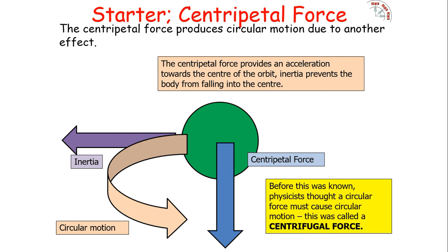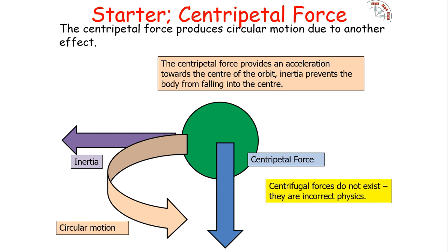Before this was understood, physicists thought that a circular force must cause a circular motion, which they called the centrifugal force. But that does not exist — it is incorrect physics, what we call a fictitious force. It is a force assumed to exist based on observations, but in reality it is the combination of two different effects — inertia resisting the centripetal force — that produces circular motion.